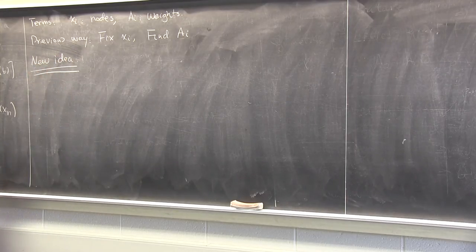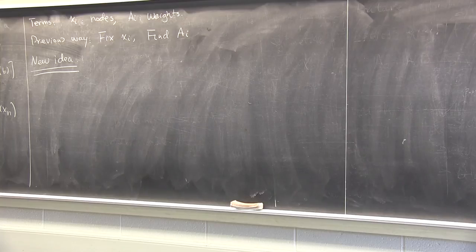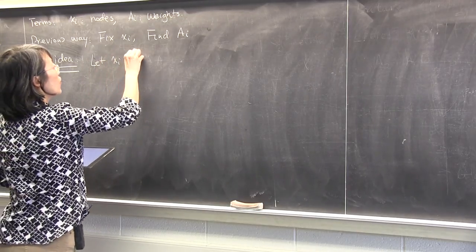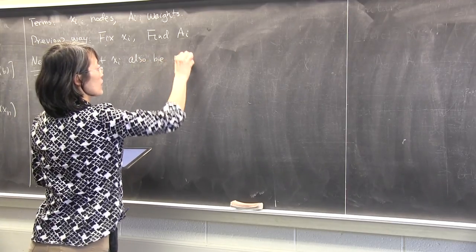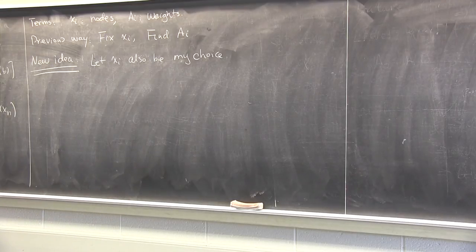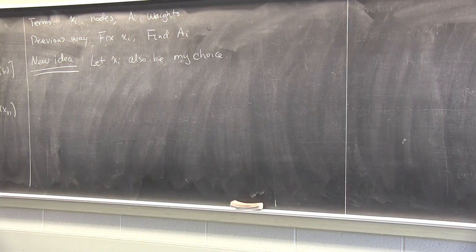We're going to change our way of thinking to achieve even higher accuracy. The new idea is: I will not fix the nodes. The xi's become also part of the things I can control and select. This immediately doubles the number of degrees of freedom, so we could achieve higher order. It's not a difficult concept, but this leads to something really nice.